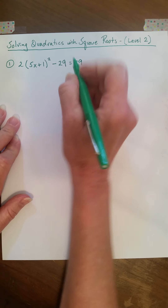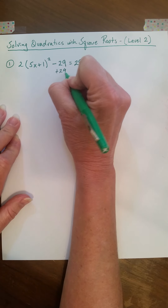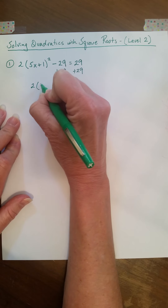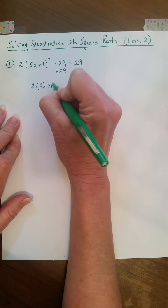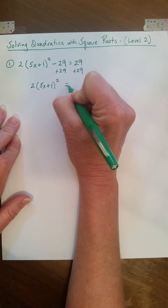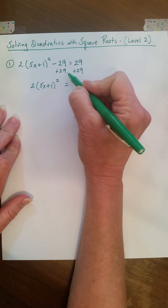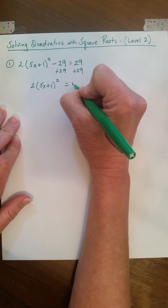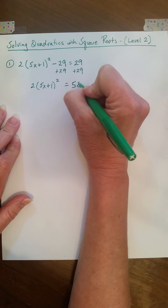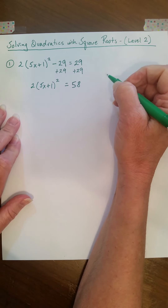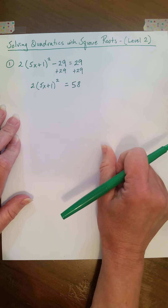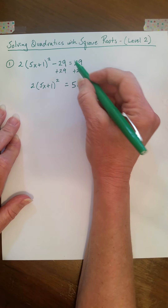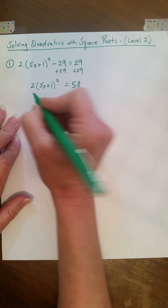So we're going to isolate this part of our equation. First, we need to add 29 to both sides. So we have 2 times the quantity 5x plus 1, squared, equals — those go away — 29 plus 29. No, it's 58. Almost made a silly mistake there. These guys are distracting me. Anyway, 9 and 9 is 18, carry the 1. Yep, 58.